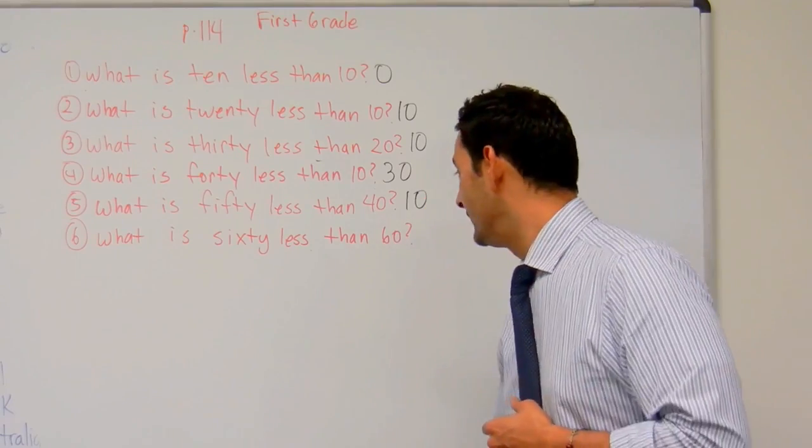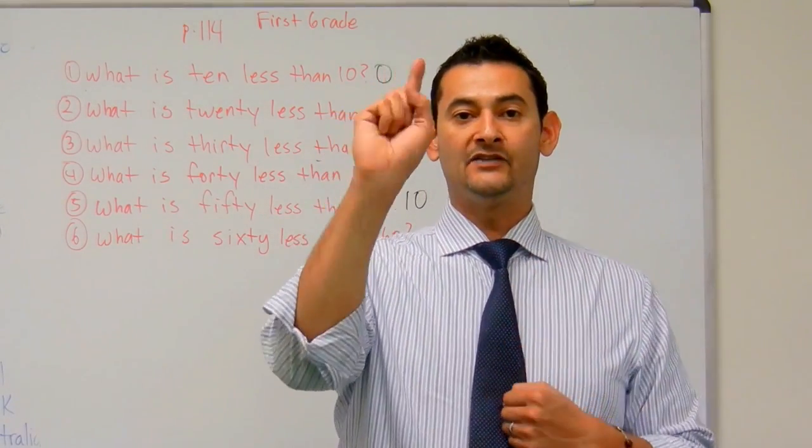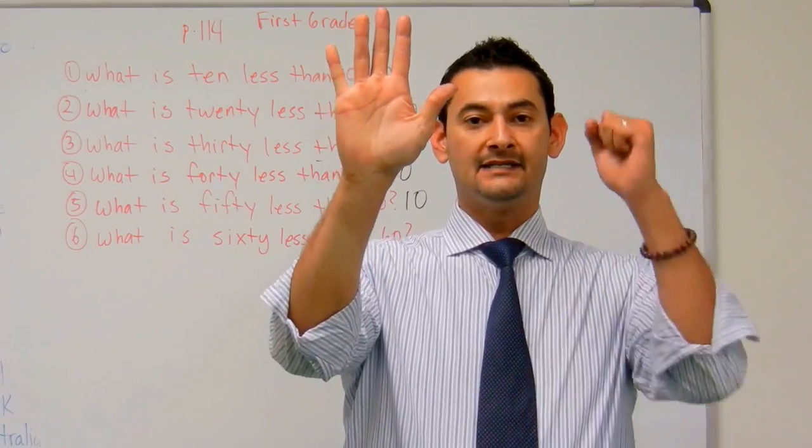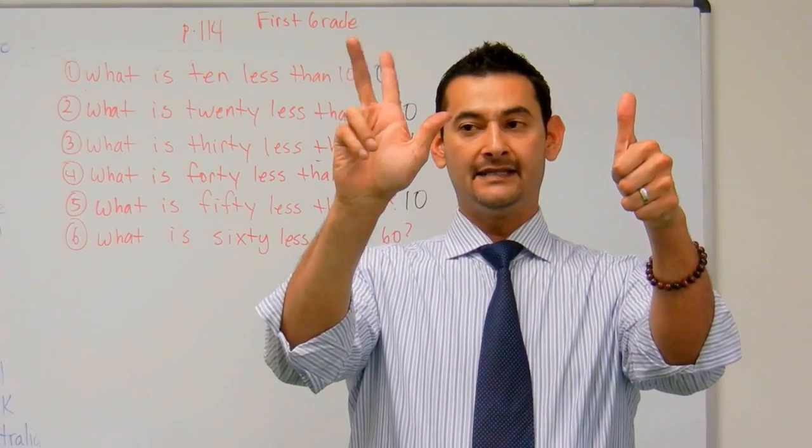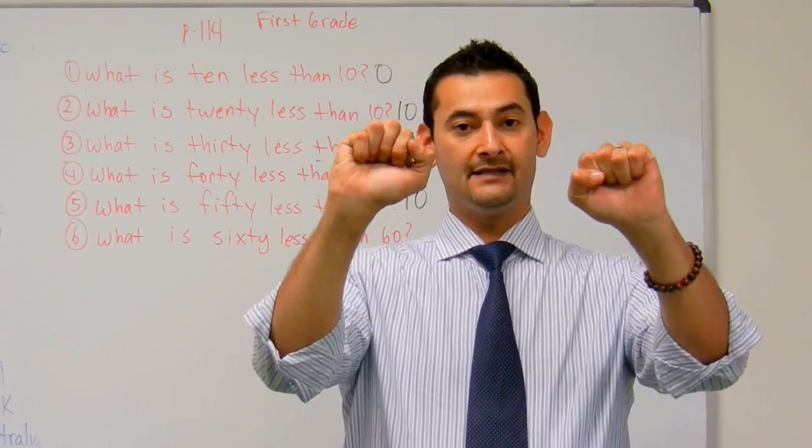And finally, what is 60 less than 60? 10, 20, 30, 40, 50, 60 less than 60, 10, 20, 30, 40, 50, 60, that's 0.